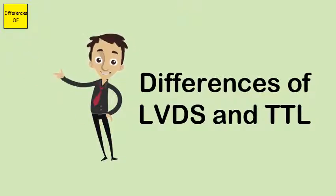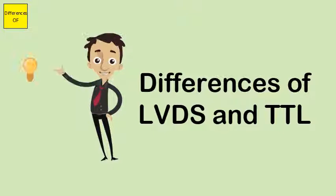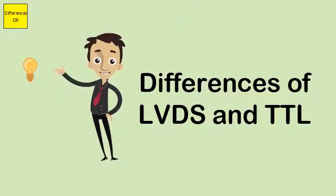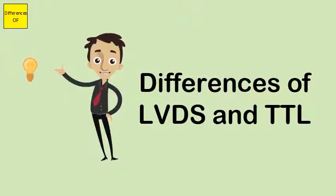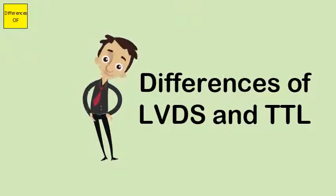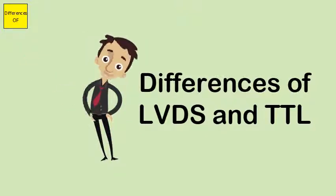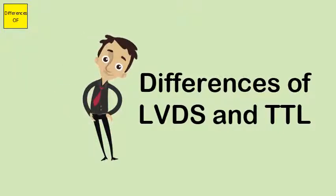LVDS transmits signals in serial and hence needs fewer wires. TTL transmits signals in parallel and hence needs more wires. TTL uses ground as reference, while LVDS does not use ground as reference.